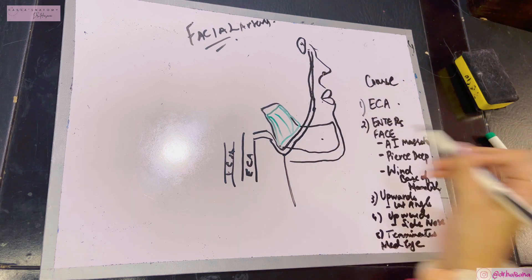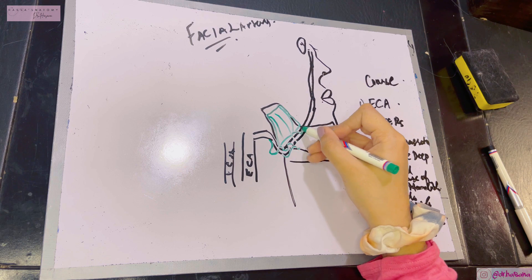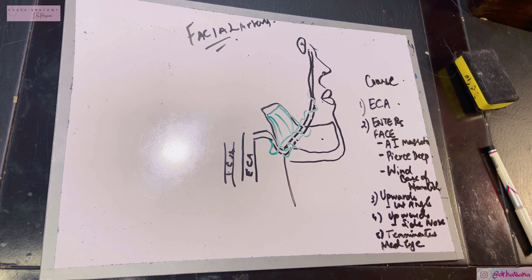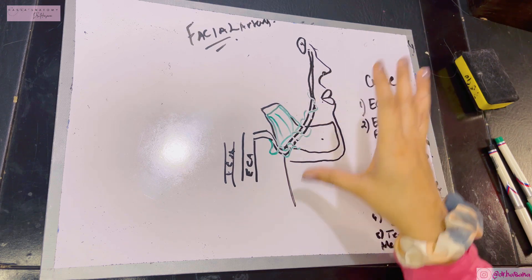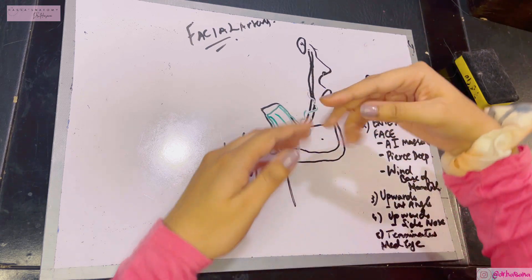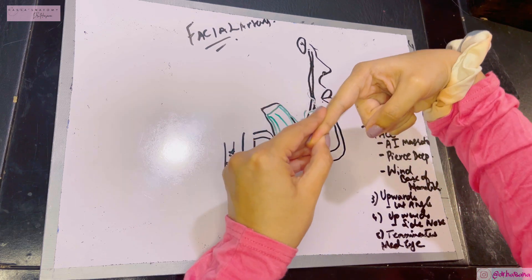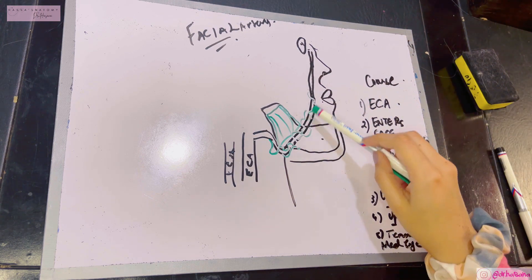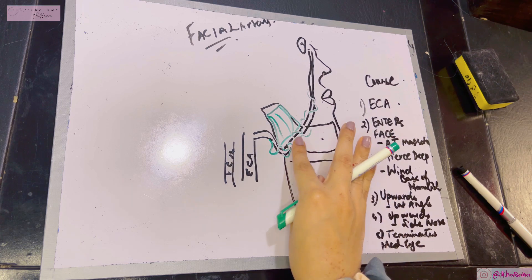The facial artery is tortuous in its course — not straight but winding. This is because the face has a lot of movements, especially in the mandibular area during chewing and eating. If the artery were straight, traction from these movements would stretch its wall. Tortuosity compensates by increasing the effective length of the vessel, accommodating movement without tension.